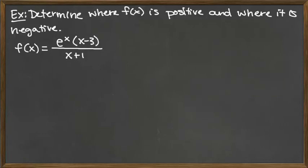In this example, we want to determine where the function f(x) equals e to the x times the factor (x minus 3) on top all over the factor (x plus 1). We want to find out where that function is positive and where it's negative.